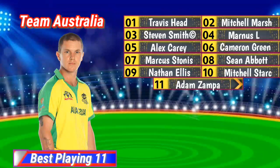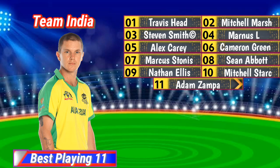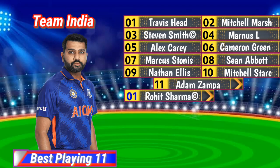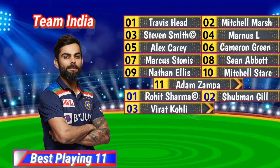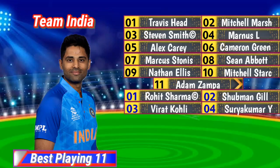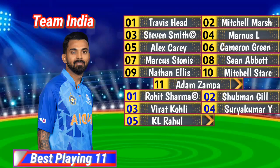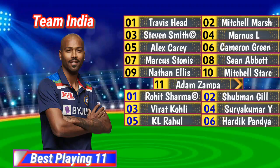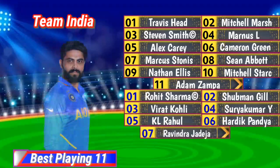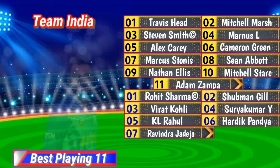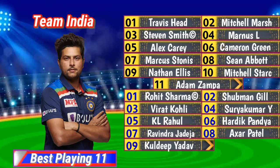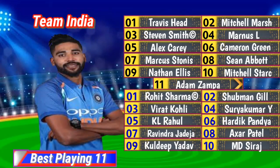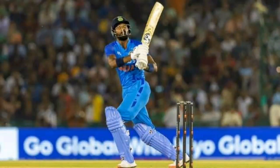Number 11 Adam Zampa. Team India Final Playing XI: Number 1 Rohit Sharma (Captain), Number 2 Shubman Gill, Number 3 Virat Kohli, Number 4 Suryakumar Yadav, Number 5 KL Rahul, Number 6 Hardik Pandya, Number 7 Ravindra Jadeja, Number 8 Axar Patel, Number 9 Kuldeep Yadav, Number 10 Mohammed Siraj, Number 11 Mohammed Shami. This is the final playing XI of both sides for the Third ODI match between Australia vs India 2023.